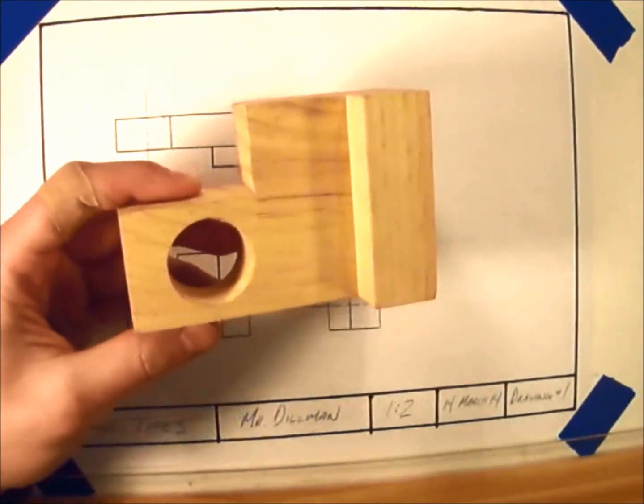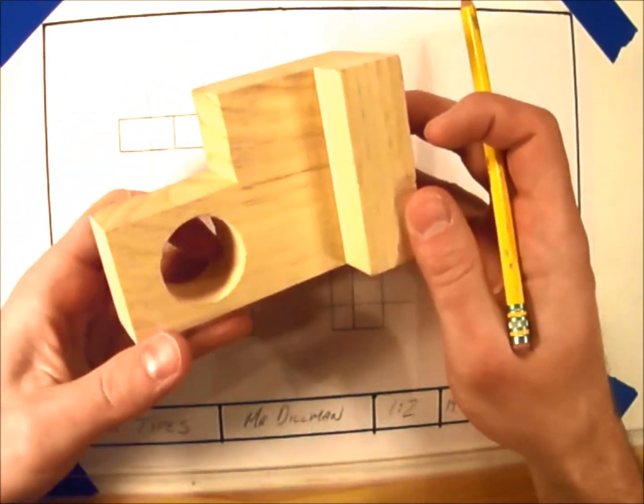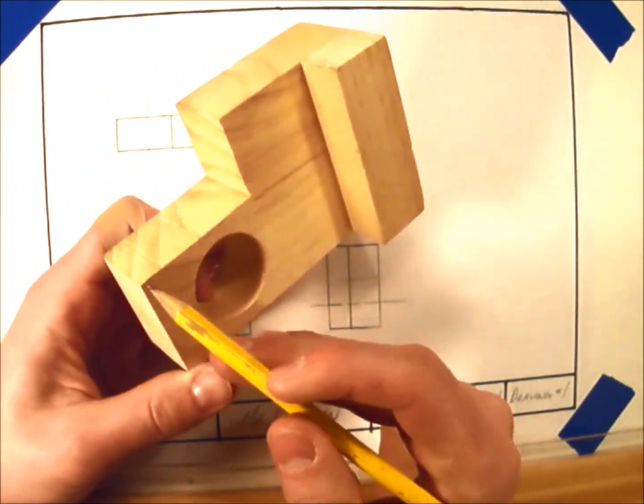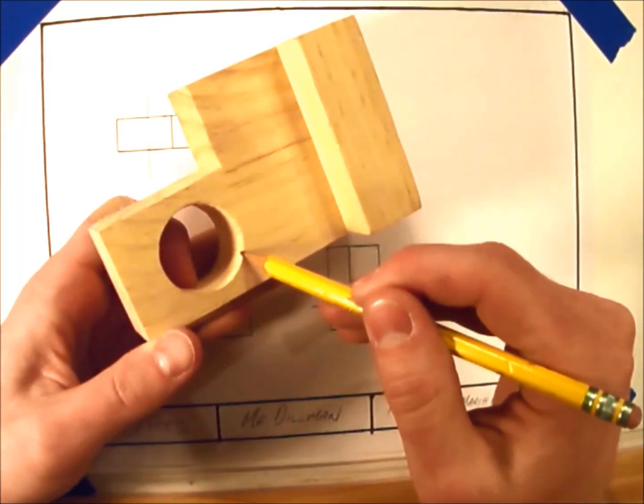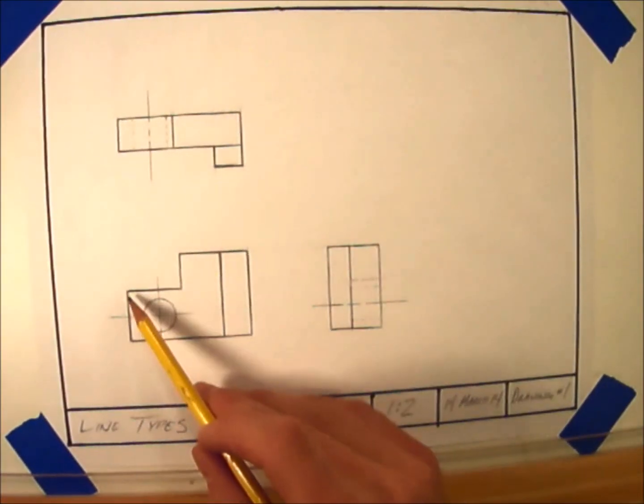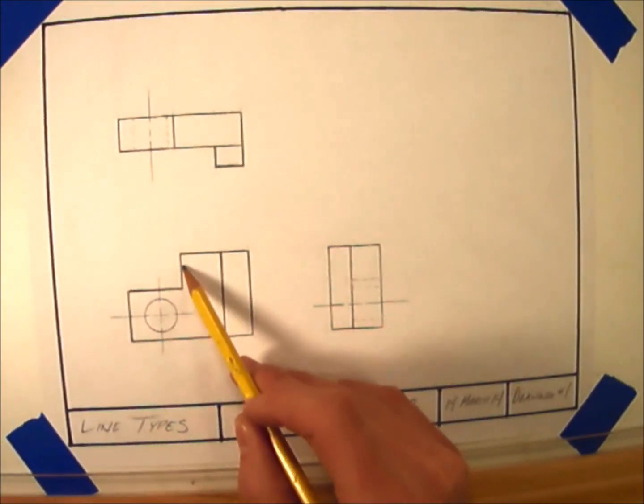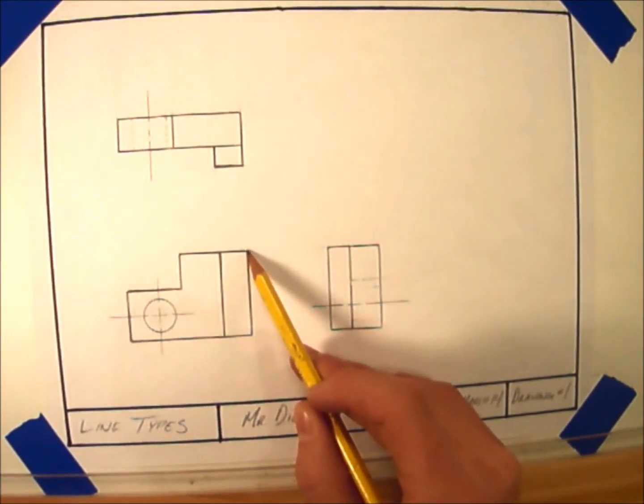The simplest type of line that we use is called an object line. Object lines represent the edges of the object we're drawing. Any place on the drawing that there is a corner or edge is shown using these lines. Object lines are bold, clear, and always drawn using a straight edge.